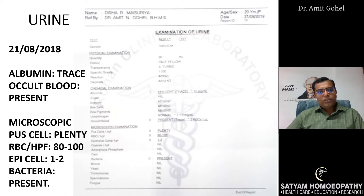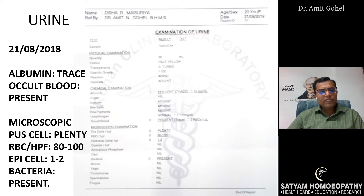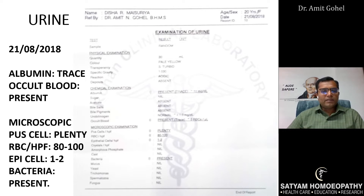The urine report showed albumin trace, occult blood present, and microscopically plenty of pus cells and RBCs around 80 to 100. Epithelial cells were 1 to 2, and bacteria were present. So it is clearly a urinary tract infection — there is pus, bleeding, and bacteria.